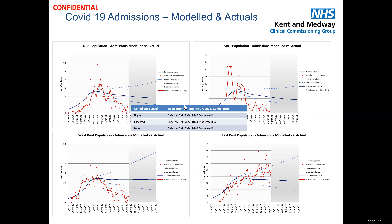If anyone has insights into more robust movement data, that would be really helpful. To clarify the compliance lines on the graphs: the dark blue expected line assumes 65% compliance among our lower-risk population — those under 70 with no comorbidities. Our moderate-risk population is those over 70 or with one or more long-term conditions, and high risk is those currently being shielded. We've varied compliance levels to generate the two dotted lines, and you can see the sensitivity of the modelling to compliance. Any help understanding what our local population is doing would be very helpful.